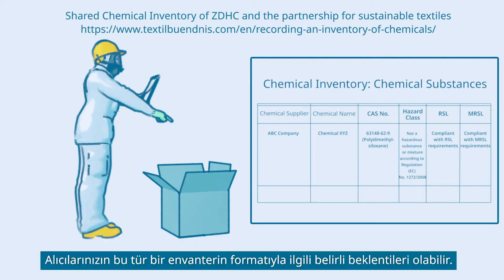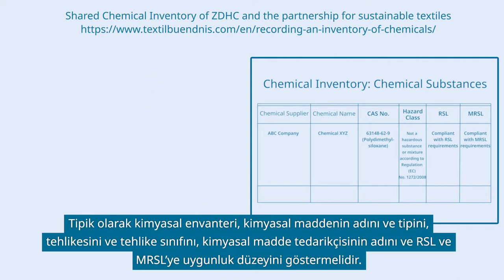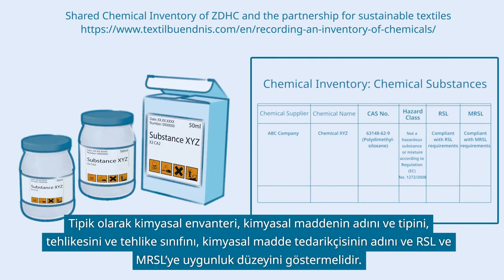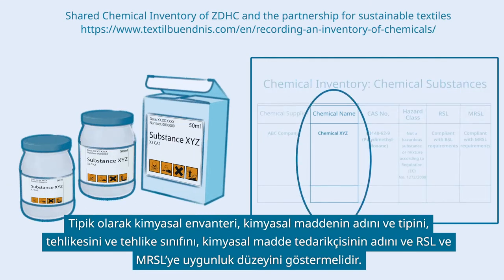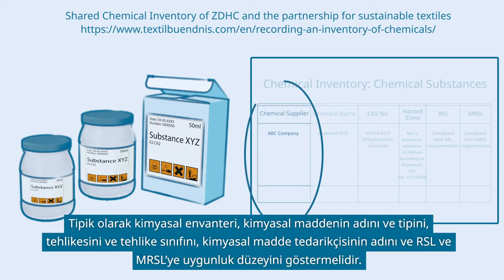Be aware that your buyers may have specific expectations regarding the format of such an inventory. Typically, the chemical inventory should indicate the name and type of chemical substance, the hazard and hazard class, and the name of the chemical supplier.